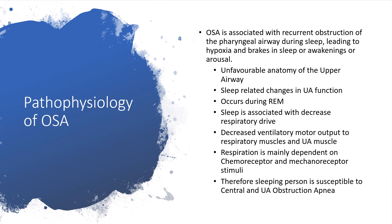Before continuing, let me quickly delve into the pathophysiology of obstructive sleep apnea, because once we're able to get that picture, everything else will be clearer. Obstructive sleep apnea is associated with recurrent obstruction of the pharyngeal airway during sleep. That will lead to apnea, which will be associated with fragmented sleep — the individual will be sleeping and waking, or getting aroused. The issue here is the unfavorable anatomy of the upper airway.